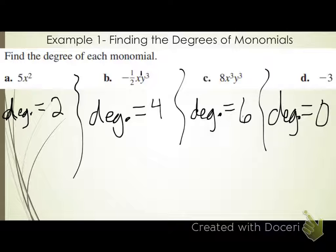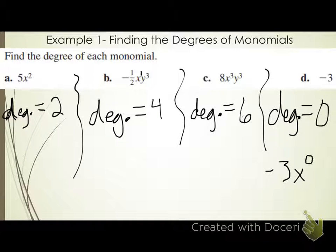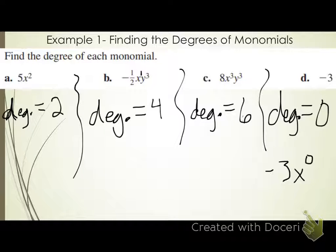Letter D: negative 3, a non-zero constant term. The degree is zero. Here's why — this doesn't have any variables, but I can write it with a variable. Anything to the zero power is 1, so negative 3 times x to the zero is negative 3 times 1, which is negative 3. The variable would have an exponent of zero, and that's why the degree of any non-zero constant term is zero.